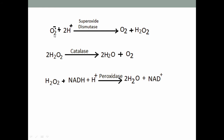Superoxide dismutase catalyzes the destruction of the superoxide radical and causes the formation of hydrogen peroxide and free oxygen gas. This hydrogen peroxide is then broken down into water and oxygen with the help of the catalase enzyme. Peroxidase enzyme is also helpful for the destruction of hydrogen peroxide.